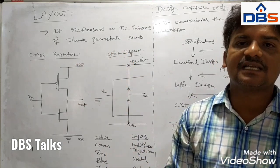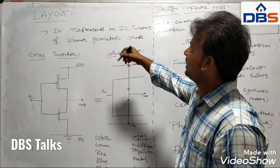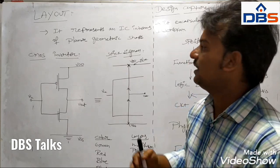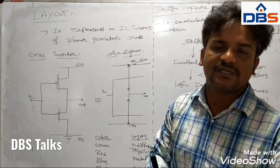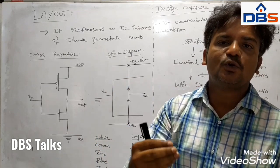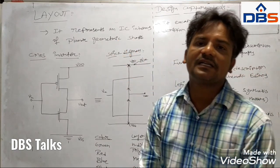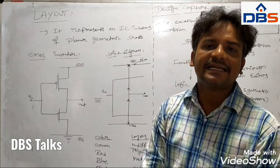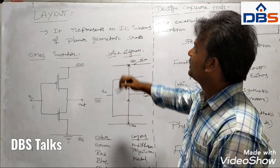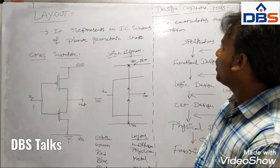We will see what is layout and how that circuit will be converted as a layout in the program. The layout is nothing but it tells us the way in which how many different layers will be present to build an integrated circuit. The layout is also called IC mask layout or integrated circuit layout. Simply, the layout represents an IC in terms of planar geometric shapes.